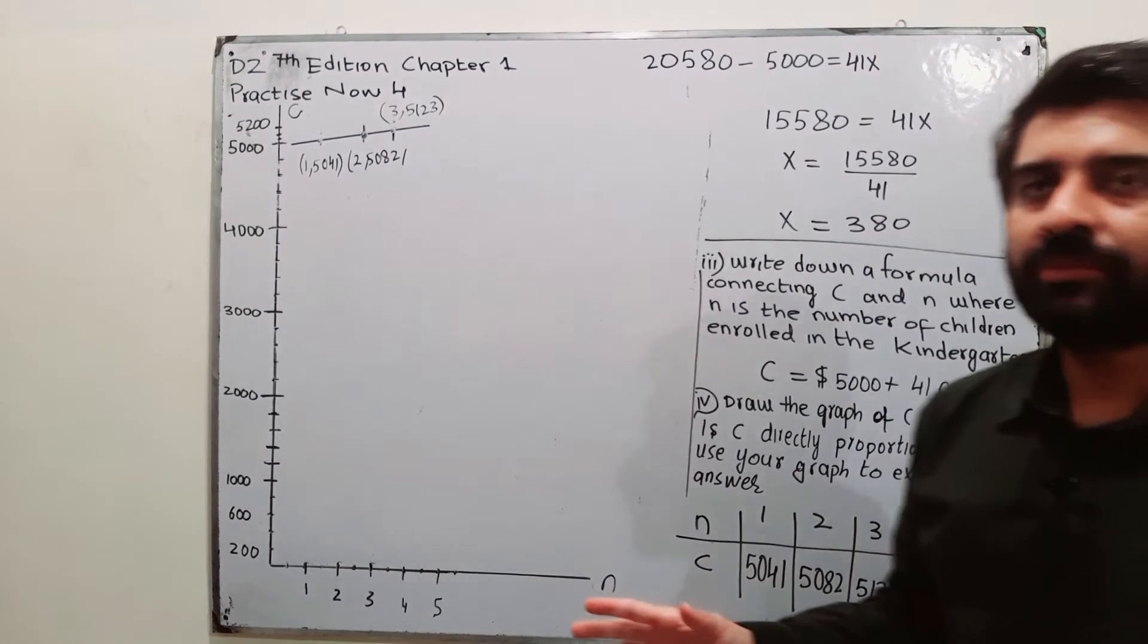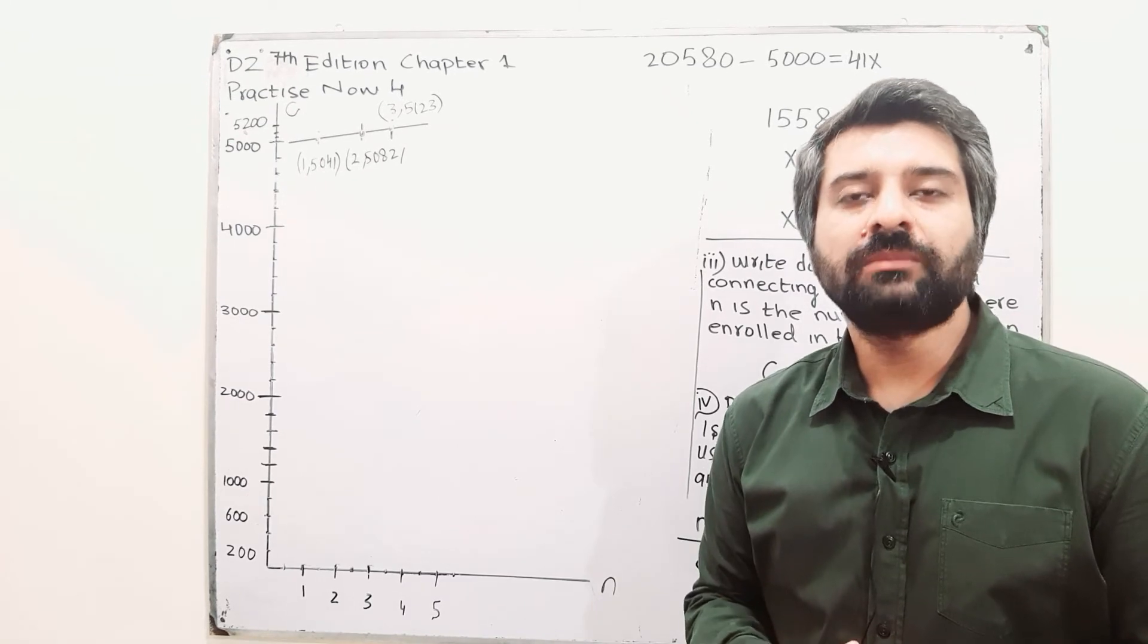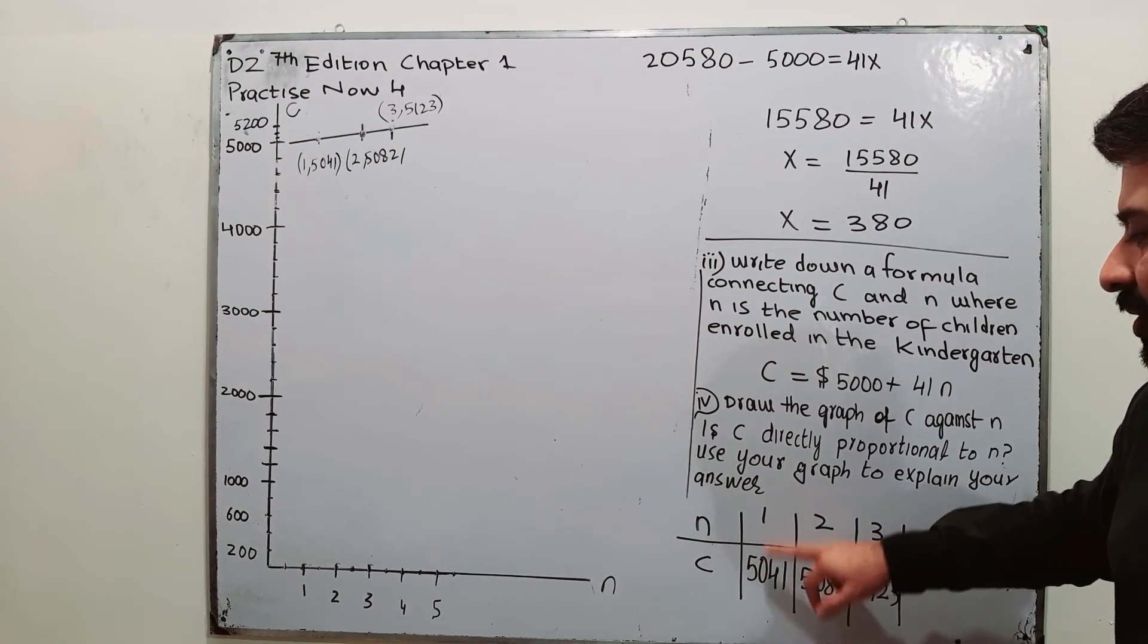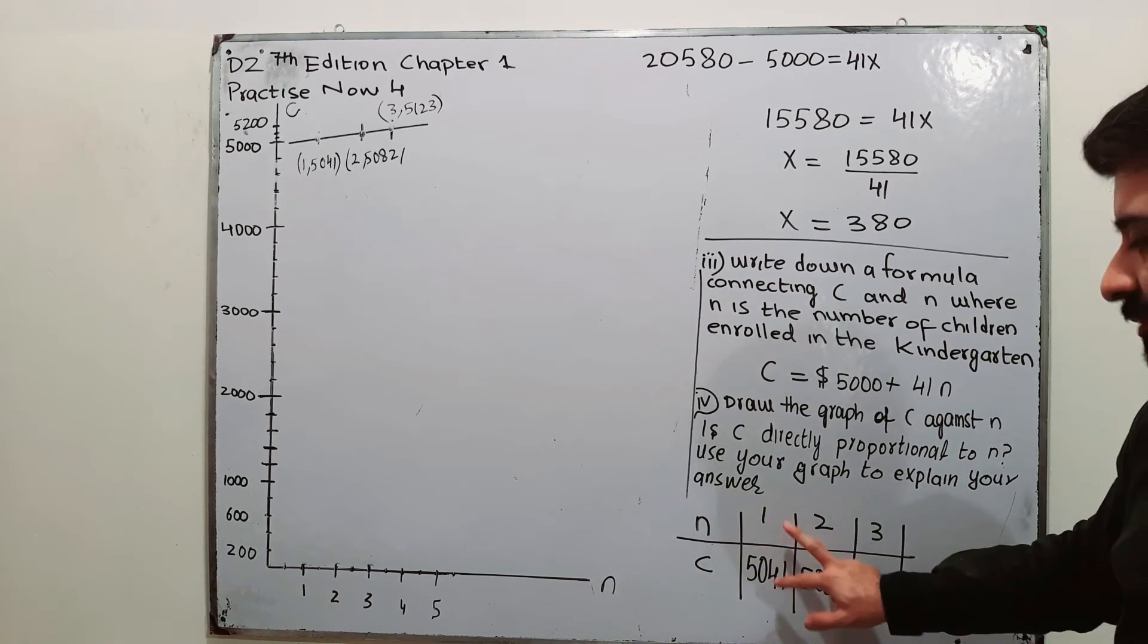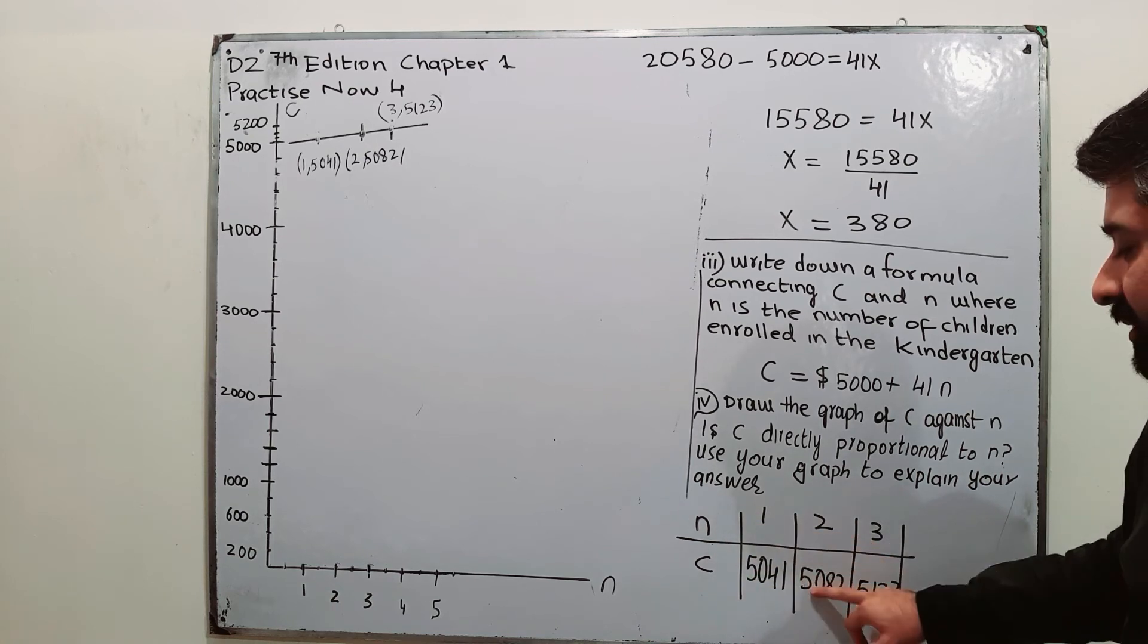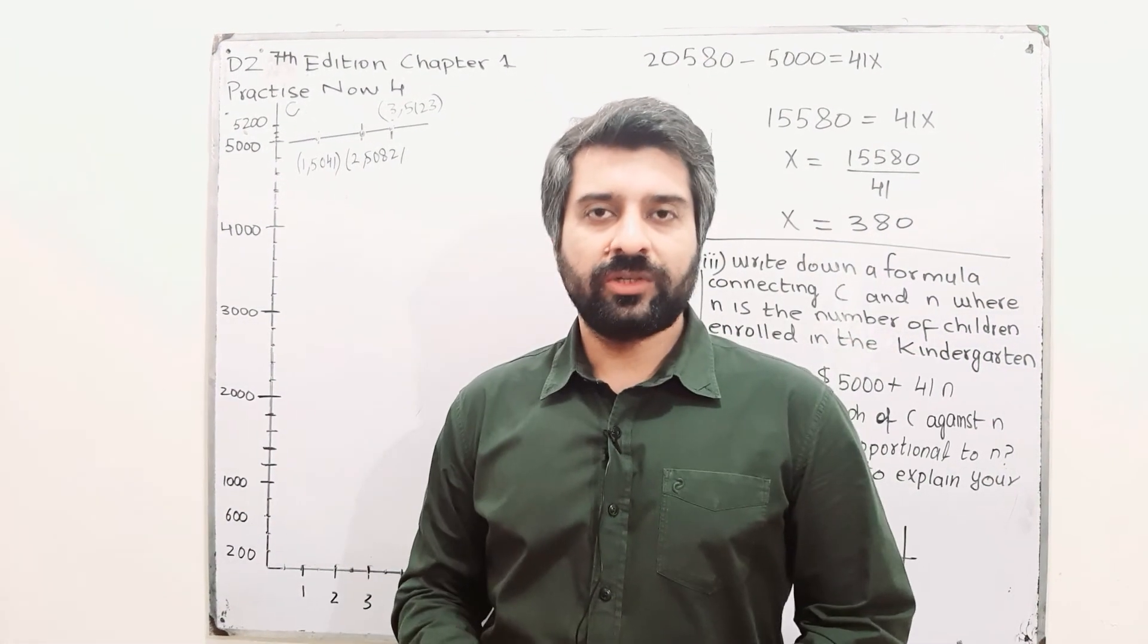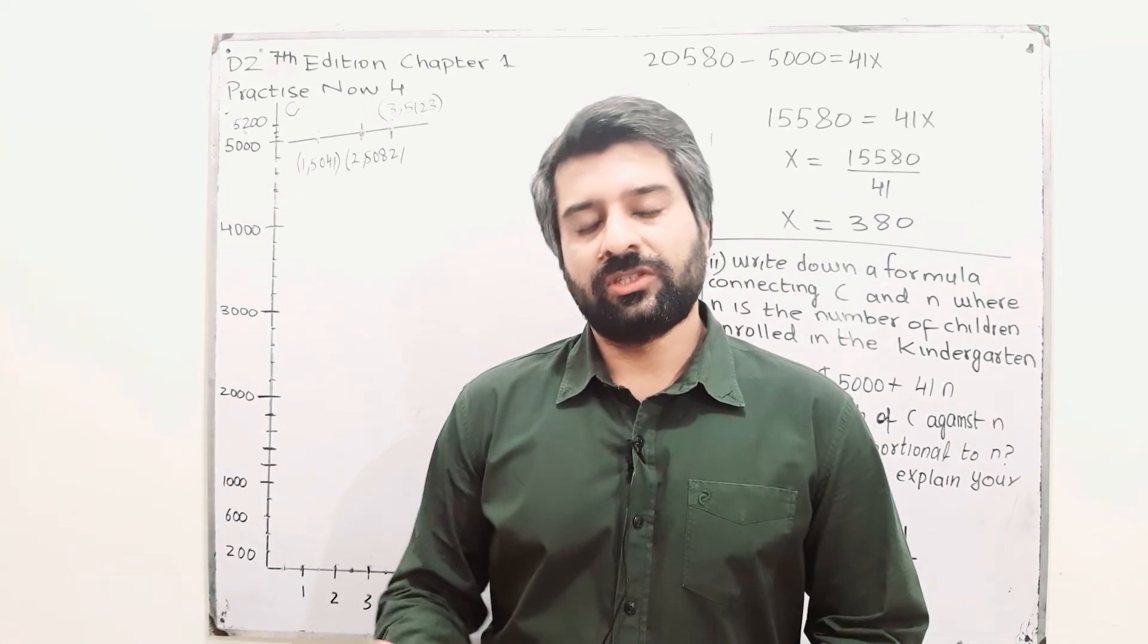Secondly, for directly proportional, it says that the ratio of N to C must be constant or the ratio of C to N, C divided by N must be constant. C over N is 5041. C over N is not 5041 in this case. In this case, C divided by N is 5041. In this case, it is not 5041. So, the ratio of C to N must be equal to K, a constant. Well, that is also not visible over here. So, the graph is not, the C and N, sorry, they are not directly proportional. This is the answer for this part.